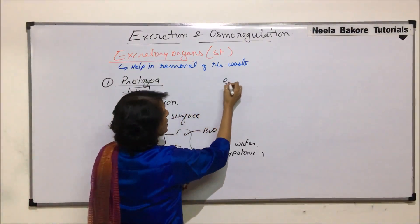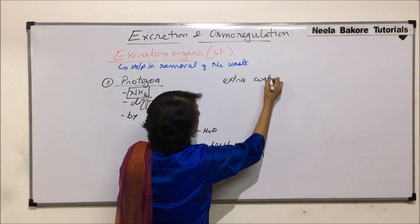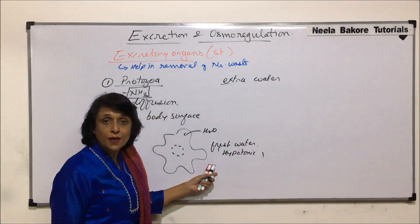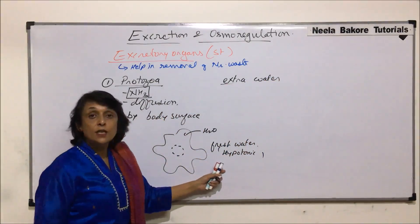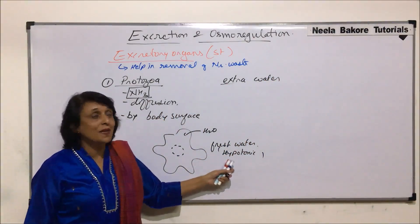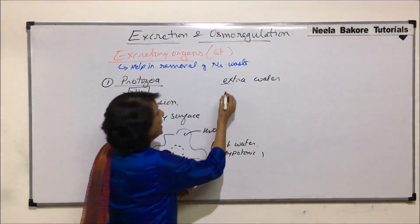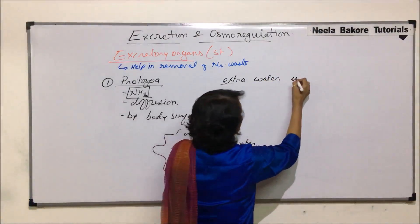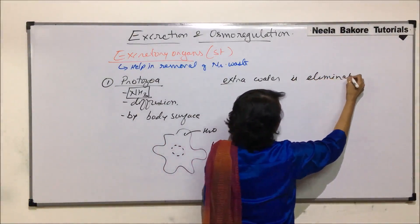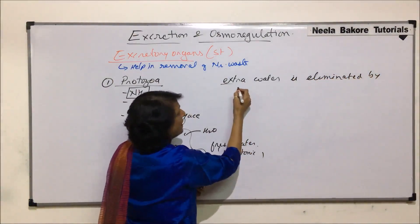The extra water which enters because of the hypotonic outer medium needs to be eliminated. This problem is not seen in marine organisms. Extra water is eliminated by contractile vacuoles.